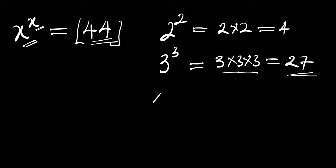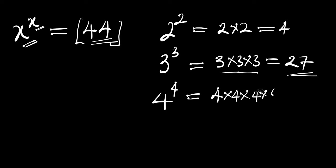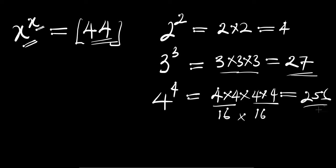So let's proceed to 4 to the power of 4. This means 4 times 4 times 4 times 4. 4 times 4 is 16, and 16 times 16 is 256. This number is far greater than 44.